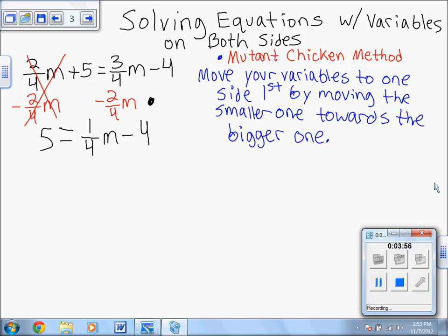So to move subtract 4, we know the inverse operation or the opposite operation. The operation that will undo minus 4 is add 4. So add 4 to both sides. On the right side, they cancel. And so we're left with 1 fourth m on the right side and the left side. 5 plus 4 gives us 9. So we're now down to a one-step equation.